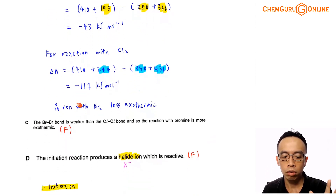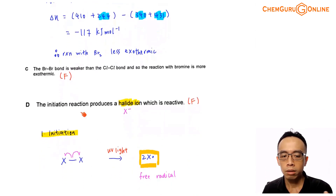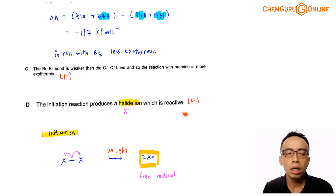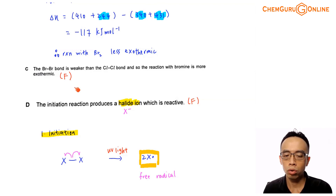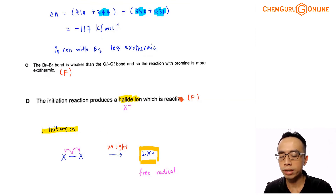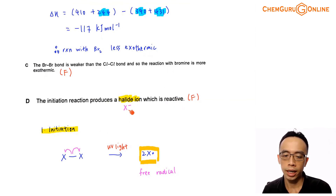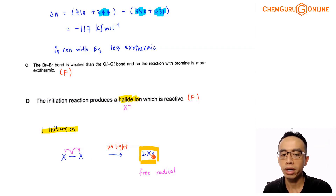Finally, for option D: the initiation reaction produces a halide ion, which is reactive. This is not true. The mechanism is free radical substitution, so the reactive species must be a free radical, which is neutral but has an odd number of electrons. The reactive species is not a halide ion. So D is definitely wrong.